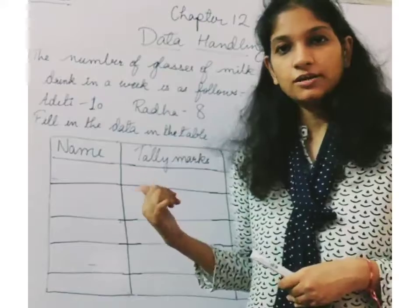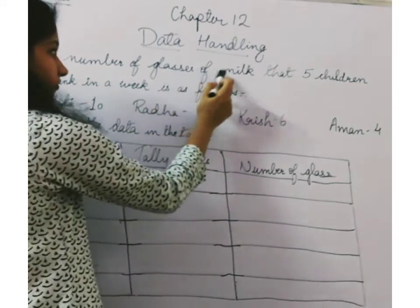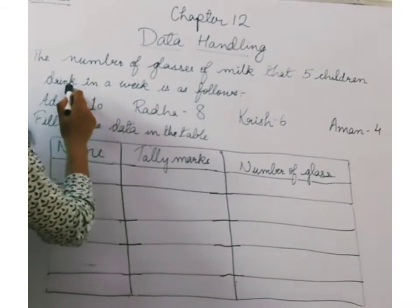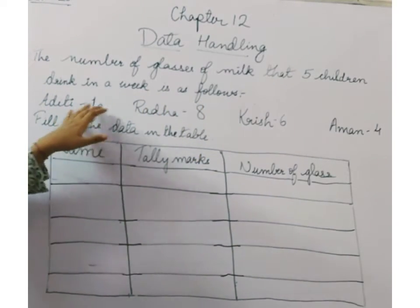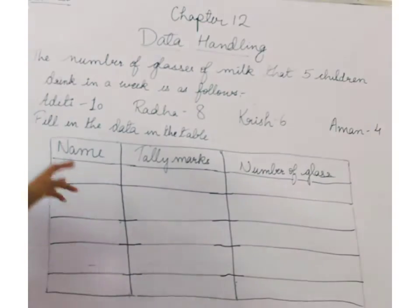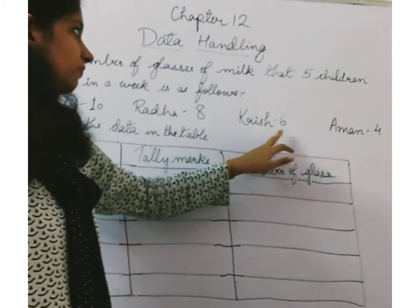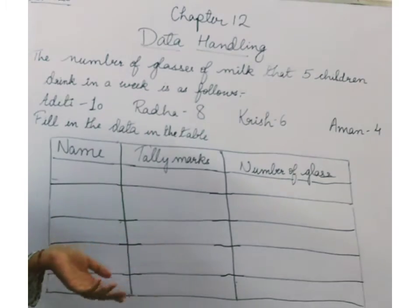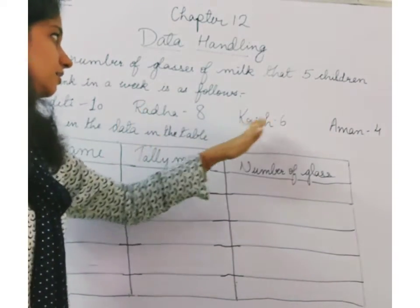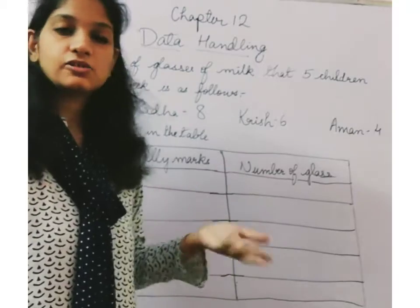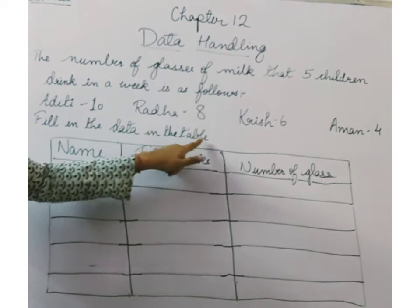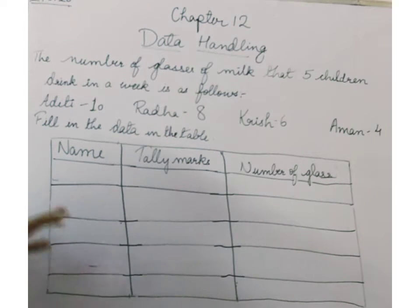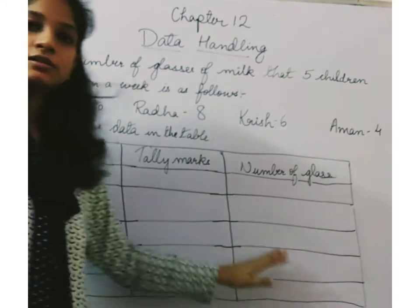I have already written a question here, so let us read the question first. The number of glasses of milk that five children drink in a week is as follows. You have been given names of some children and the number of glasses of milk that they drink in a week. Next, fill in the data in the table — this table is given and you have to fill in the data.